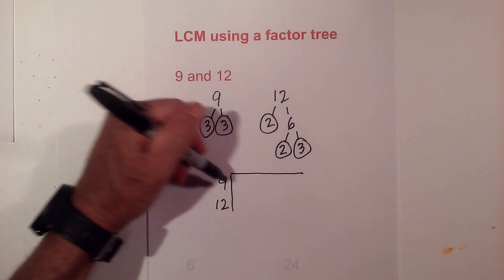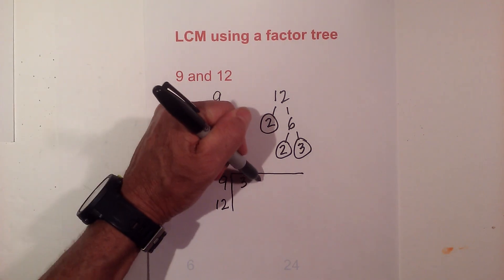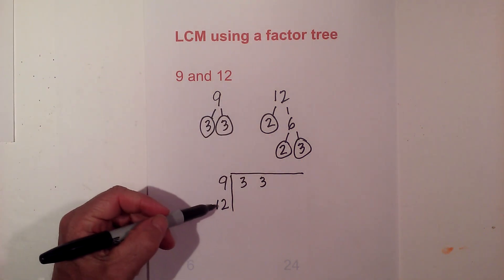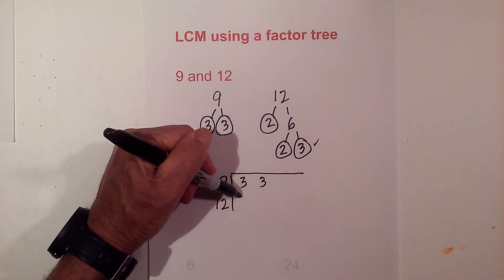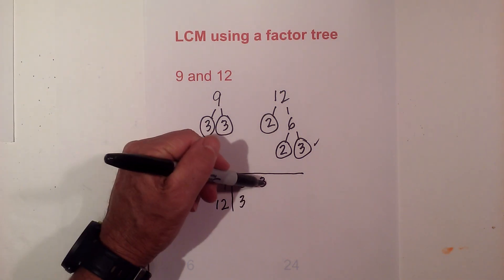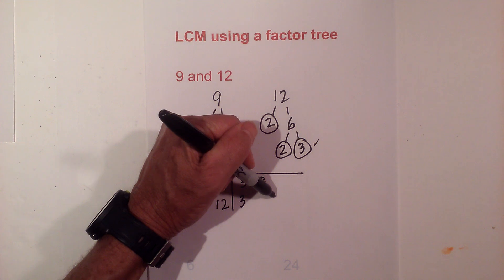I write down the prime numbers for 9. There is a 3 and a 3. For 12 I am going to first start with this 3. I am going to put a check by it. So the 3 is there. I don't have another 3 so I am going to skip over.